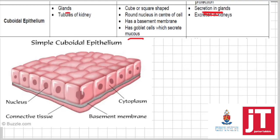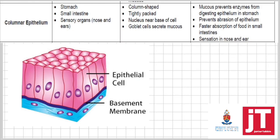Secretion means to release useful substances. When this tissue is found in the kidney, it plays a role in excretion — you'll learn more about this in grade 11. To summarize cuboidal epithelium: it has a basement membrane, is cube-shaped, has a round nucleus, is tightly packed. When found in glands it plays a role in secretion, and when found in the kidney it plays a role in excretion. Excretion means to remove metabolic waste.